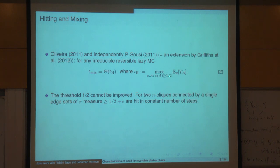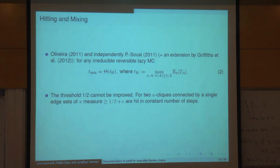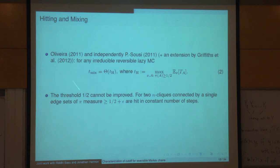Recall the theorem Perla explained: the mixing time up to constant is t_h, where t_h is the maximum over all sets of measure at least one-half of the hitting time of that set. She explained it with one-eighth here, but it's true with any threshold at most one-half. Here we'd like to sharpen it.